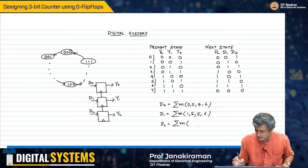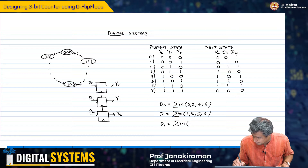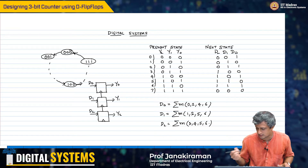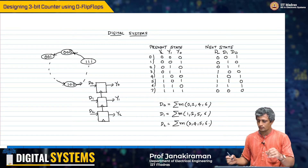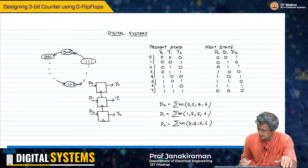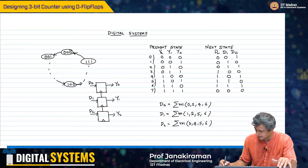D2 is the sum of minterms 3, 4, 5, and 6. So, let us try to simplify these expressions.